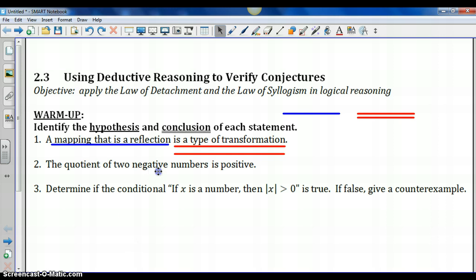Number two, the quotient of two negative numbers is positive. This is a little more difficult to word as an if-then statement. But if we did, it might sound something like this: If two numbers are negative, then their quotient is positive. So our hypothesis is actually in the middle, two negative numbers. The conclusion is split between the quotient is positive.